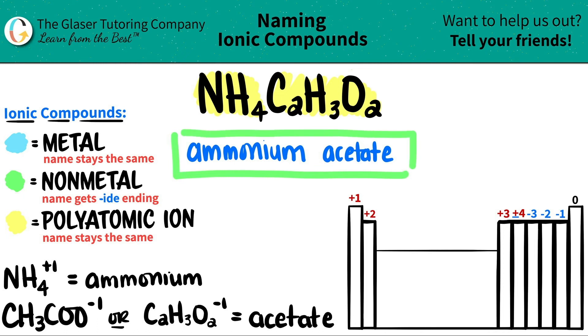So this looked a little scary, but it wasn't. Two polyatomics, that's it. So NH4C2H3O2 is just ammonium acetate.